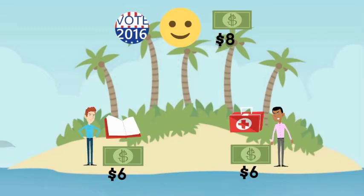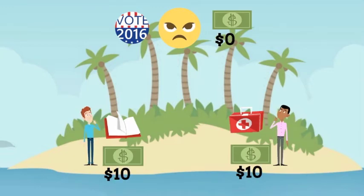This is how honest money constrains the scope and size of a government. This makes the government unhappy, and it looks for a way to break the constraints of honest money. It does this by convincing Peter and Paul to allow it to print money. The next time it offers goods and services for free, it doesn't have to do it through honest taxation — it can be done by printing money, which it then proceeds to do.